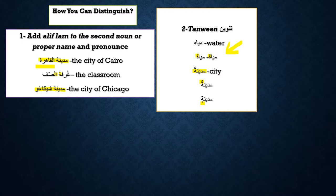For 'madina,' you cannot say 'madinaha' or 'madinahon' — it's 'madinatan.' You pronounce the ta and you hear it. But for 'miyah,' you cannot say 'miyahatun' or 'miyahaton' — it is not a word in Arabic. So if you don't hear that ta sound when adding tanwin, that means the noun ends in ha, not ta marbuta.